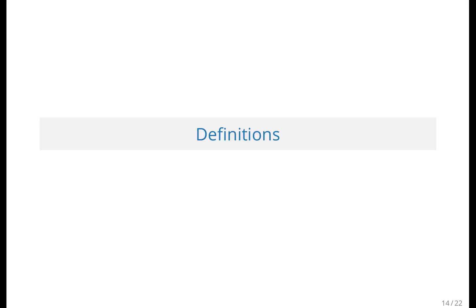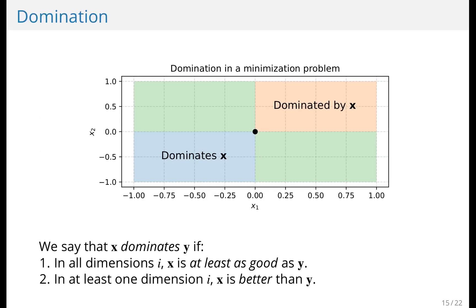I want to briefly look at some definitions very informally. If we have an apartment or point in general, x, we say that x dominates y if in all dimensions x is at least as good as y. Another way of saying this is x is no worse than y in any dimension. And in at least one dimension, x is better than y.